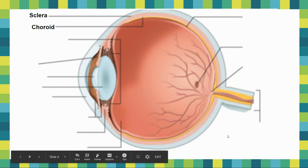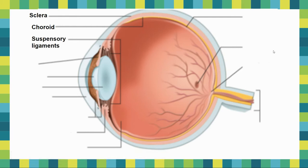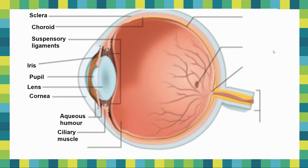Then the next layer is called the choroid. Followed by the suspensory ligaments on either side of the lens. You have your iris, your pupil, your lens, your aqueous humor, your ciliary muscles, your vitreous humor — that's a lot of parts on the front.